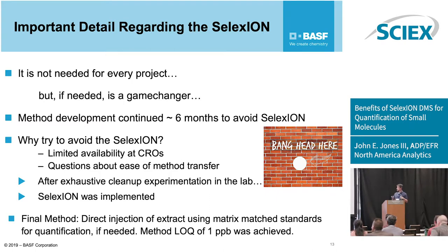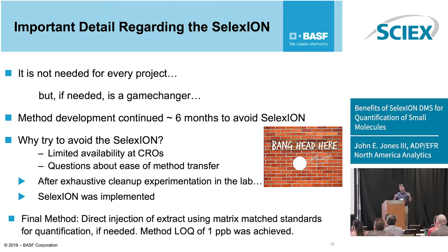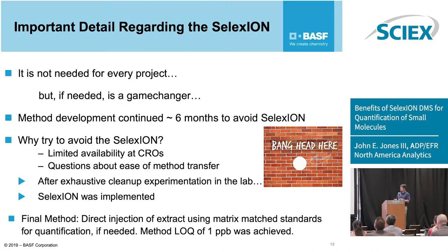We worked for about six months to avoid using SELEXION for this project. You might ask why avoid it when you know it works. At that point it had limited availability in CROs, and we knew we were contracting out a good bit of the analysis. Since we had a learning curve when we implemented it, we were concerned about the learning curve when going outside — would the method transfer easily? After exhaustive cleanup and experimentation in the lab, SELEXION was implemented on a 6500+ and instead of any laboratory cleanup, we concentrated the extract and directly injected it, using matrix-matched standards if necessary.